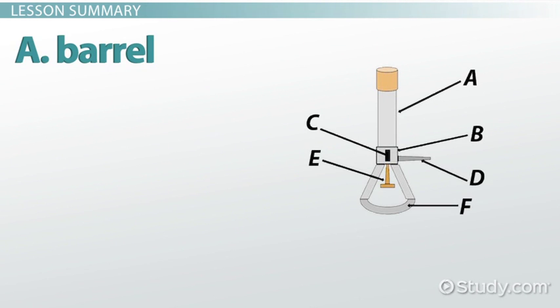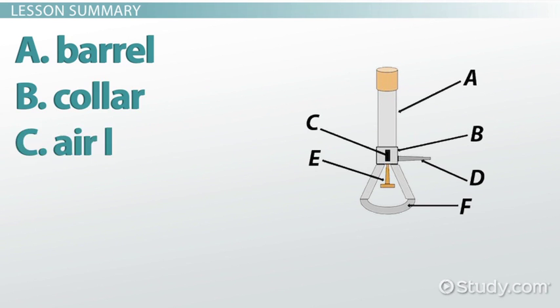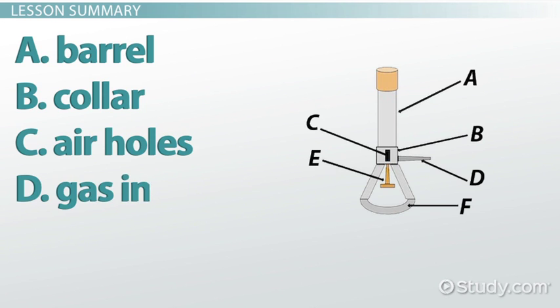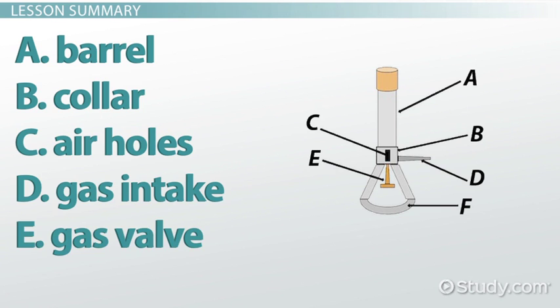The barrel is usually about 5 inches long and provides a space for the burner's flame. The collar, which is located at the bottom of the burner, contains air holes that help control the flow of oxygen into the barrel. The gas intake connects the burner to a source of gas, usually methane, and the gas valve controls the flow of gas.